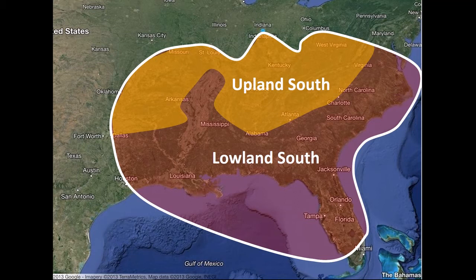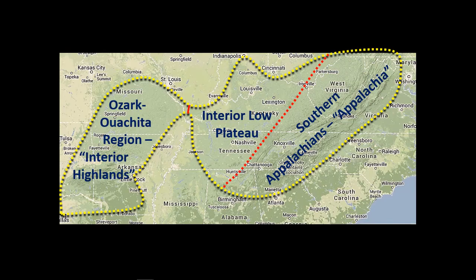Let's begin by looking at what is the upland south. The upland south is going to include three different sub-regions, beginning over here in the east along the Appalachian Mountains — the aptly named Southern Appalachians. I'll also refer to this particular area as Appalachia.